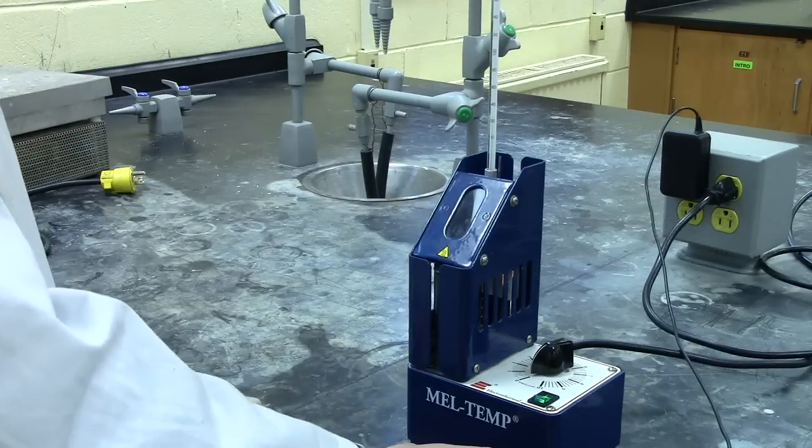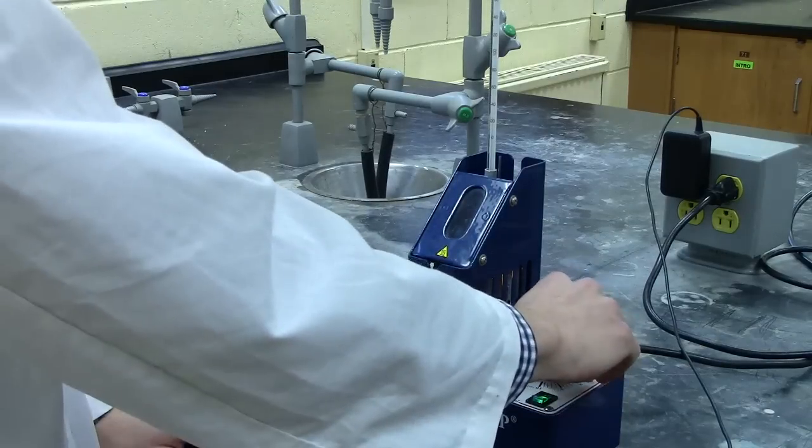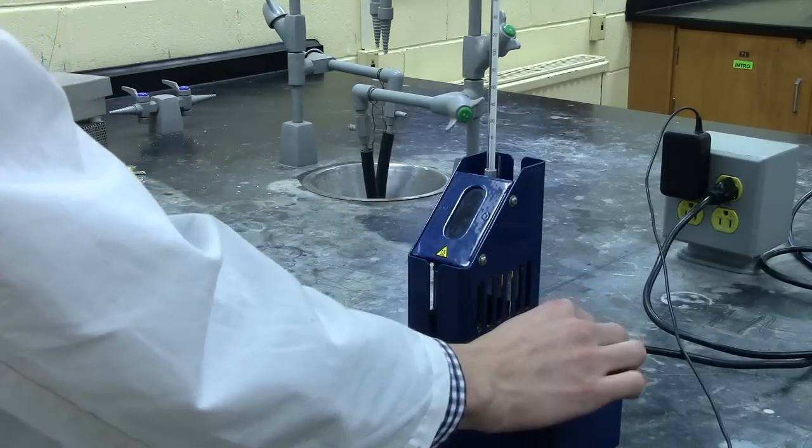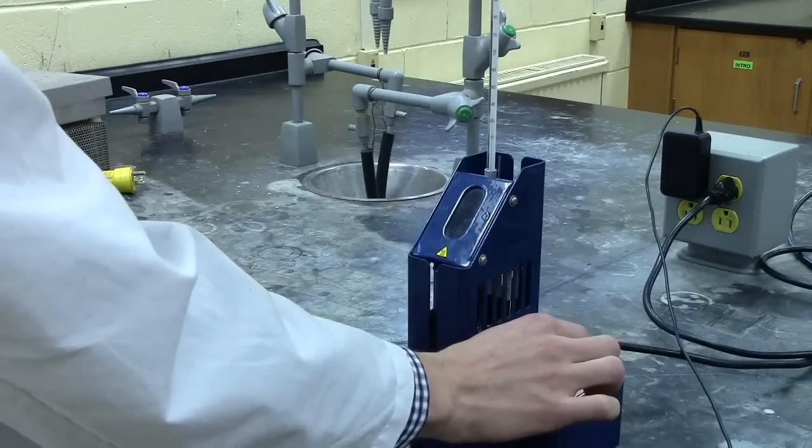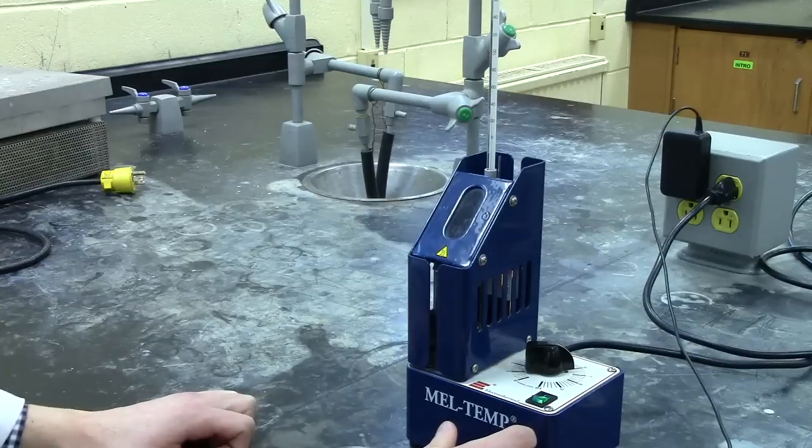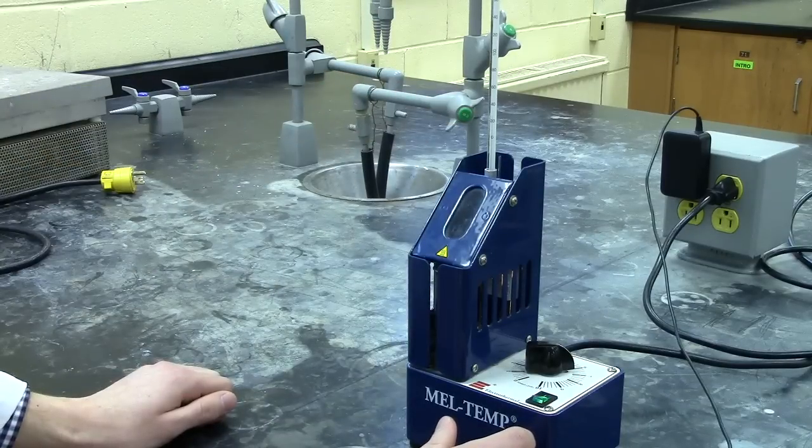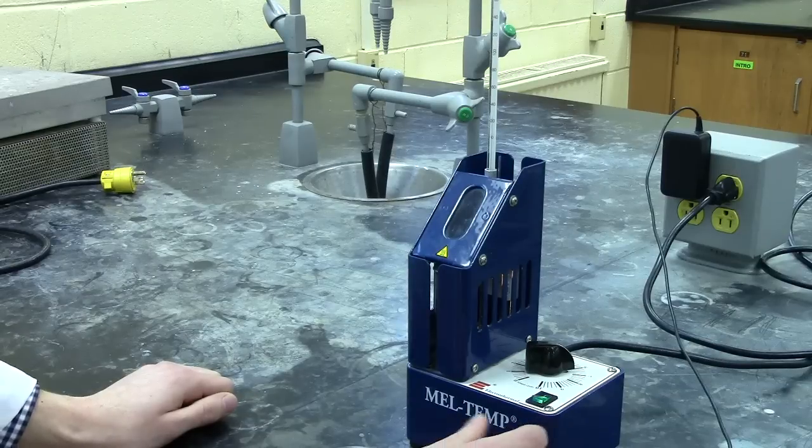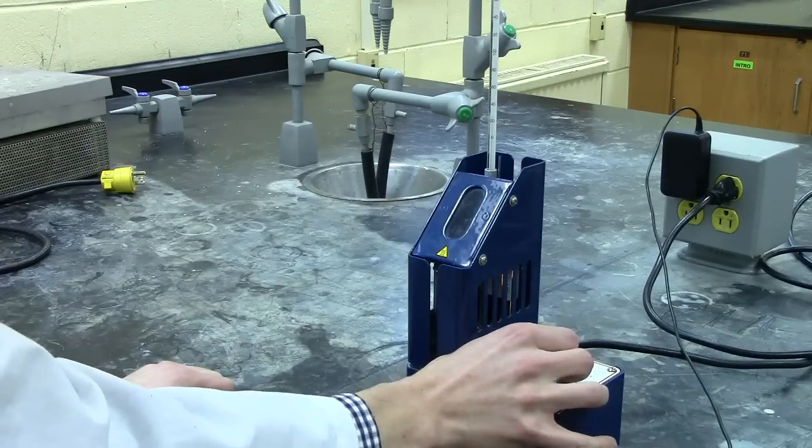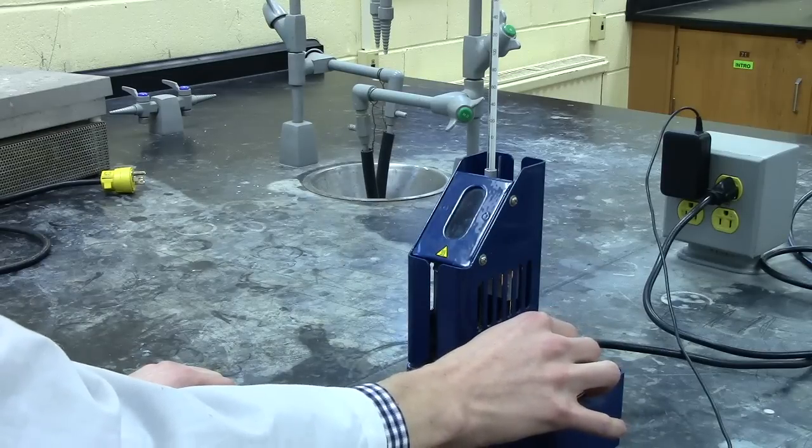To begin, if you have an idea of what the melt temperature or the range of temperatures you're expecting, you can turn the power level, which determines how quick the temperature increases, to roughly six or seven. By watching the temperature on your thermometer, once you approach your melt temperature or the range of melt temperatures you're expecting, you may want to decrease the rate of change based on the power level to between three or four.